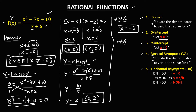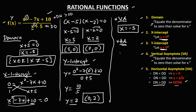For the horizontal asymptote, using these conditions: if the degree of the numerator is less than the degree of the denominator, then y equals 0; if equal, that's the ratio of the leading coefficients; if the degree of the numerator is greater than the degree of the denominator, there is no horizontal asymptote. From this given, the degree of the numerator is 2 and the degree of the denominator is 1. Since the degree of the numerator is greater than the degree of the denominator, therefore there is no horizontal asymptote.